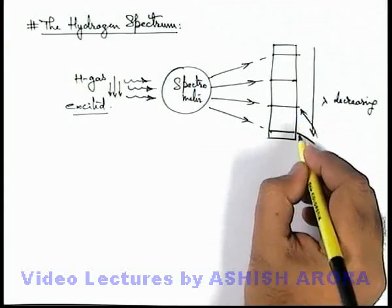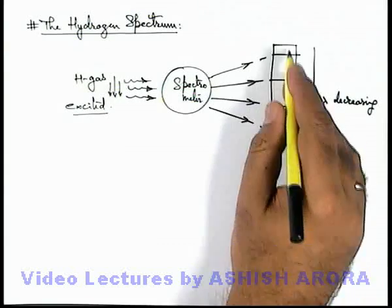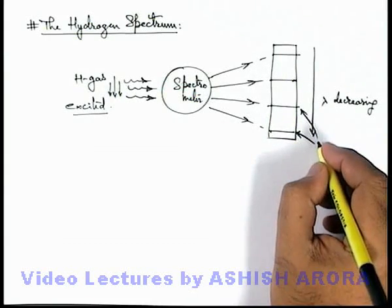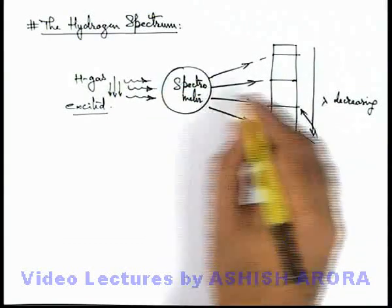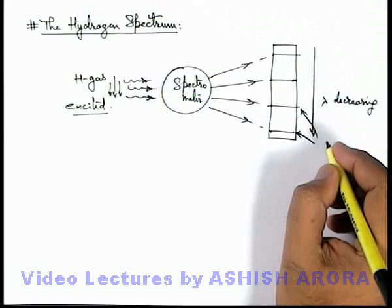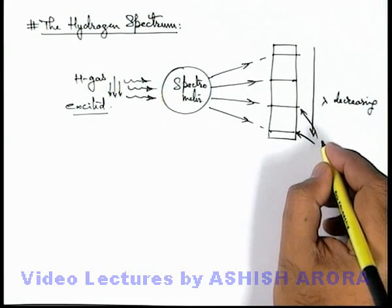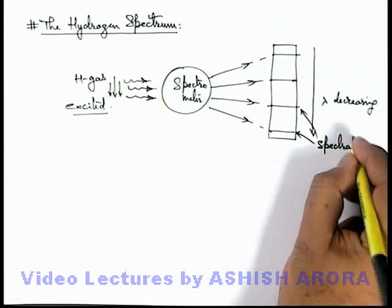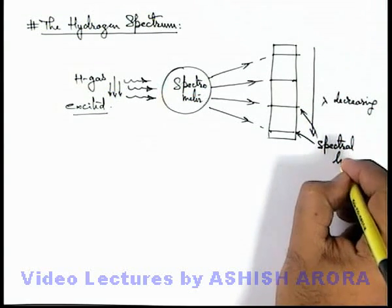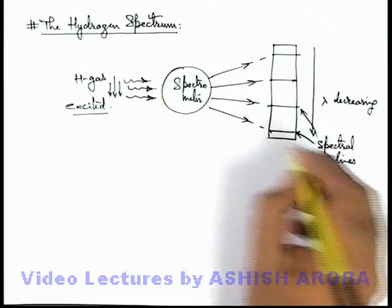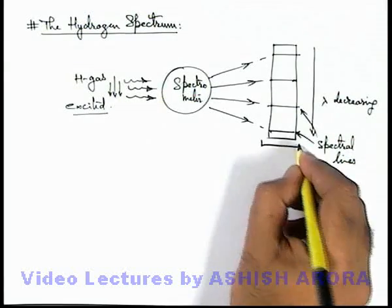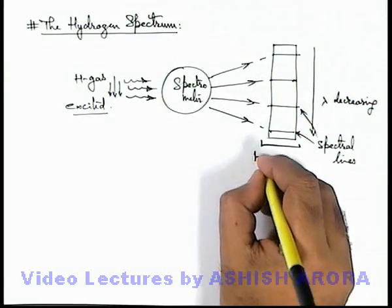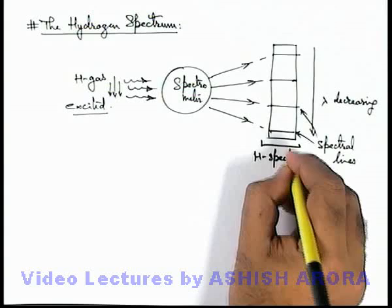All these lines obtained on the photograph of this spectrometer screen are called spectral lines, and this arrangement of these spectral lines we call the hydrogen spectrum.